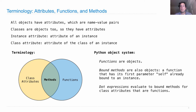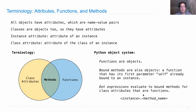A dot expression is there to give us those bound methods, so a dot expression evaluates to a bound method when you take an instance and look up one of its class attributes and that class attribute is a function. You write an expression that evaluates to some instance, then put a dot and then a name of a method — which is a class attribute whose value is a function — and when you evaluate this you get back a bound method.